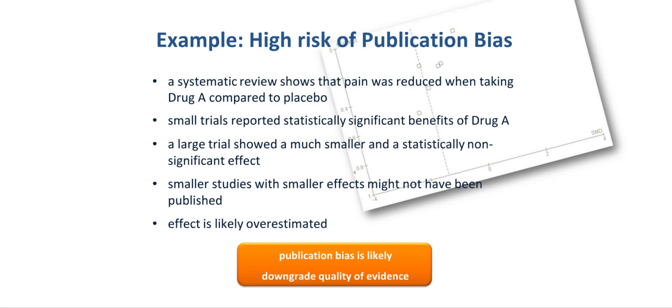There are other examples of a high risk of publication bias. For instance, the systematic review shows that pain was reduced when taking drug A compared to placebo, and the systematic review primarily reported on small trials that showed a statistically significant benefit of drug A. And if there is indication that larger trials showed a much smaller benefit that, for instance, was not statistically significant, such a distribution may indicate that smaller studies with smaller or negative effects might have not been published. And under those circumstances, publication bias may be likely, and one would downgrade the quality of evidence, because the confidence in the estimate, which is likely overestimated, is reduced.